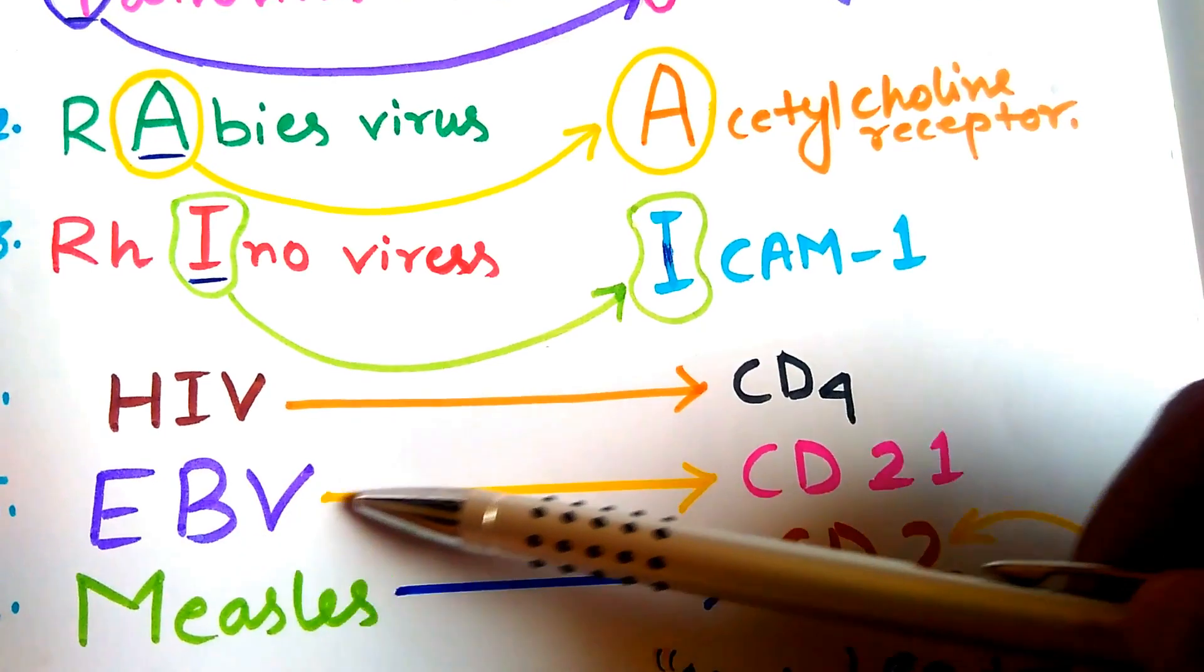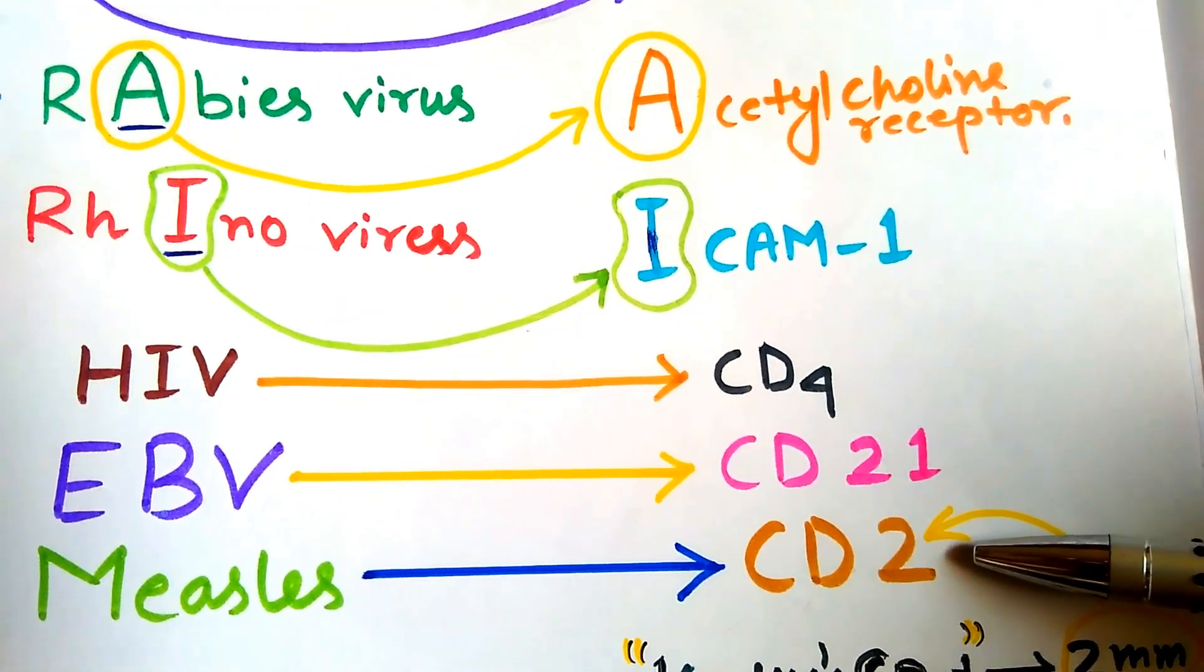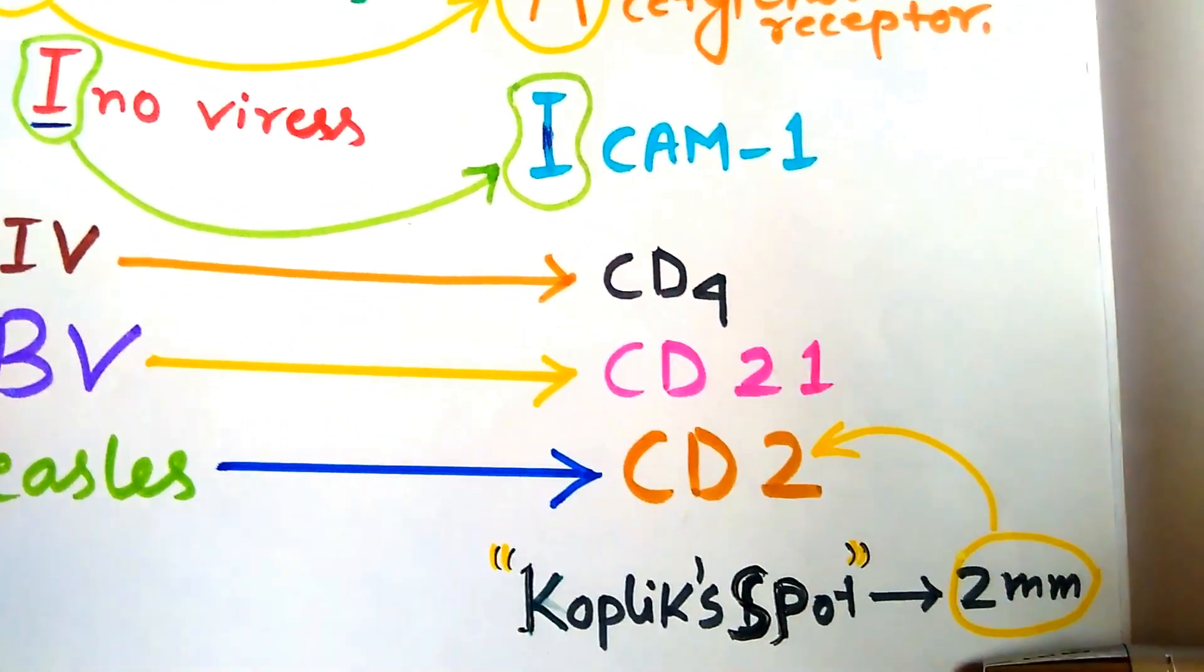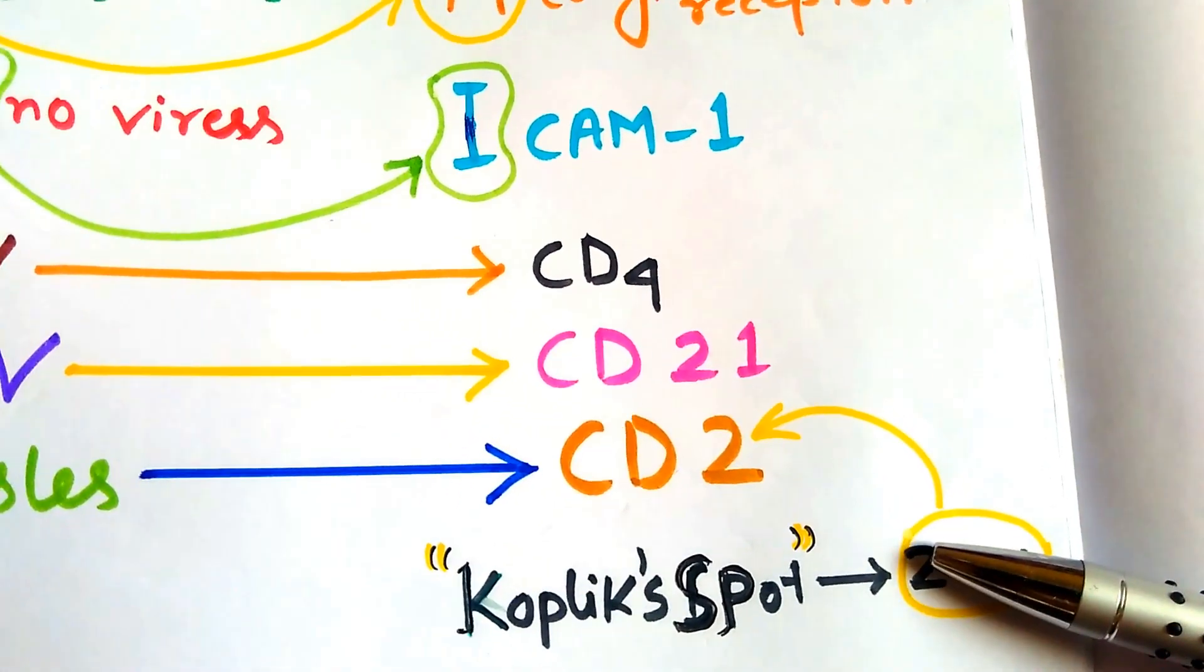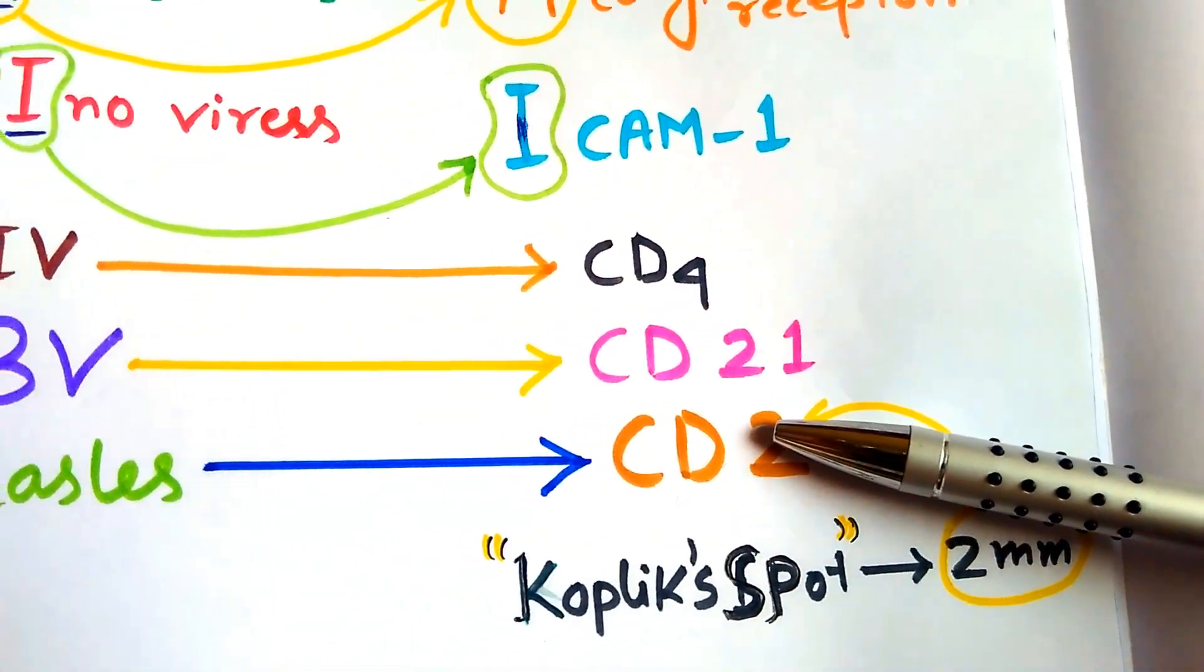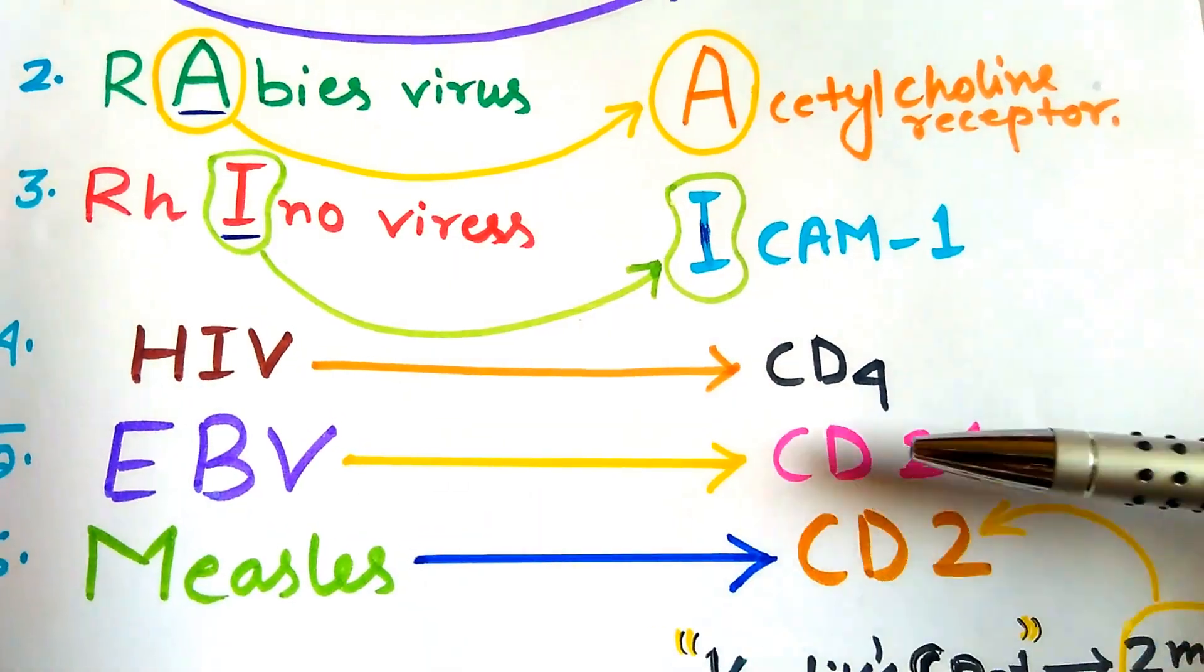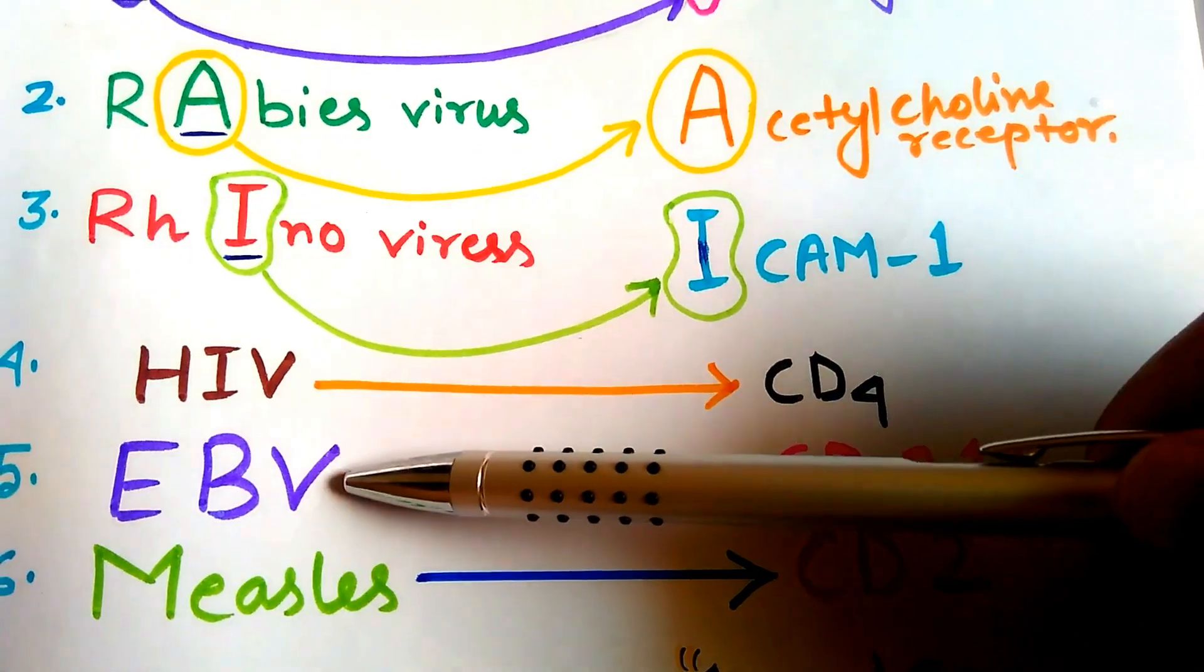Now the headache is Epstein-Barr virus CD21 and Measles CD2. So friends, how to remember? In measles we can find Koplik spots. The diameter of Koplik spot is 2 mm, so there is a 2, so CD2, which is a receptor of Measles. The rest is CD21, which we can remember for Epstein-Barr virus.